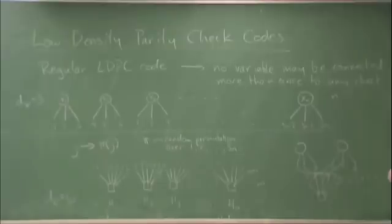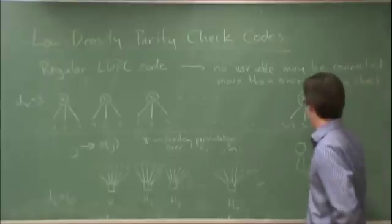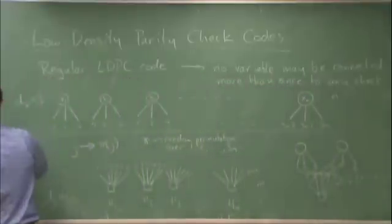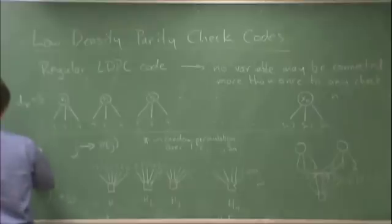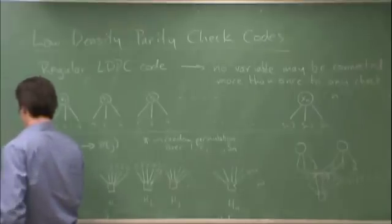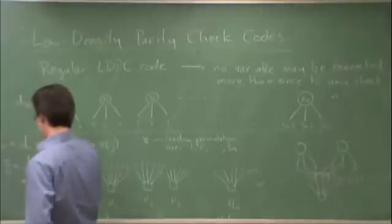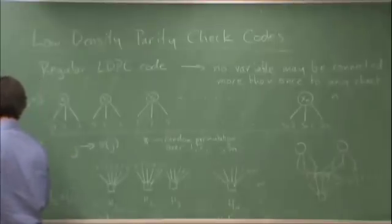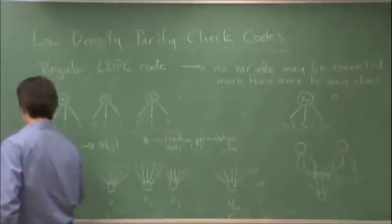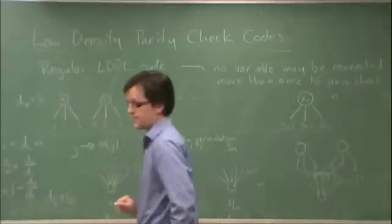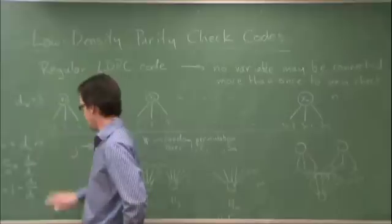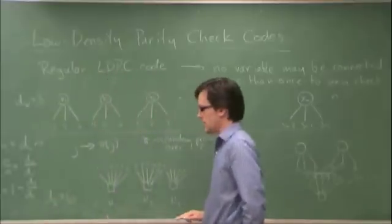Now, we have our parity check matrix. Let me just emphasize this point. The number of edges up here and the number of edges down here must be the same. So what that implies is that dv times n equals dc times m, which means m over n equals dv over dc. Therefore, the rate is equal to 1 minus dv over dc generally. So for example, if dv is 3 and dc is 4, what's my rate?